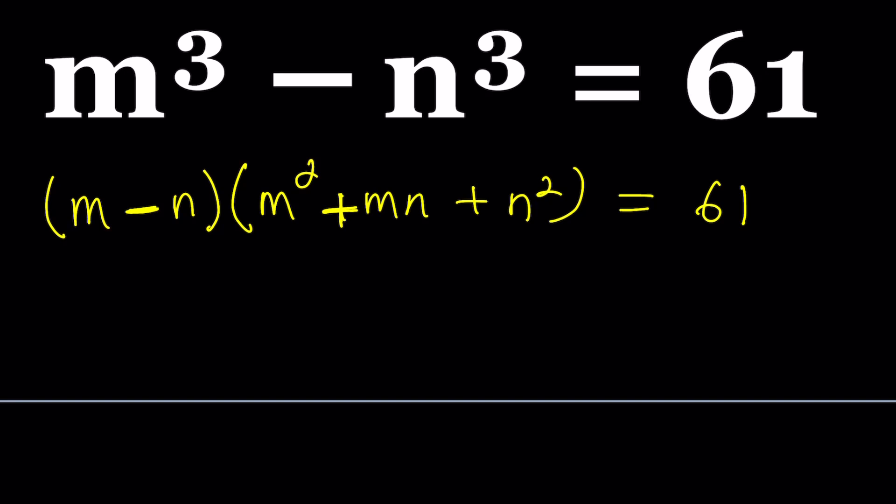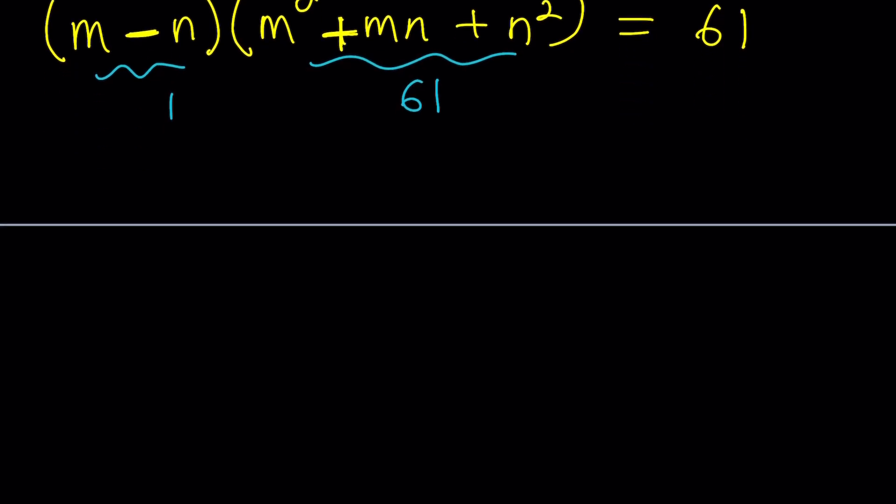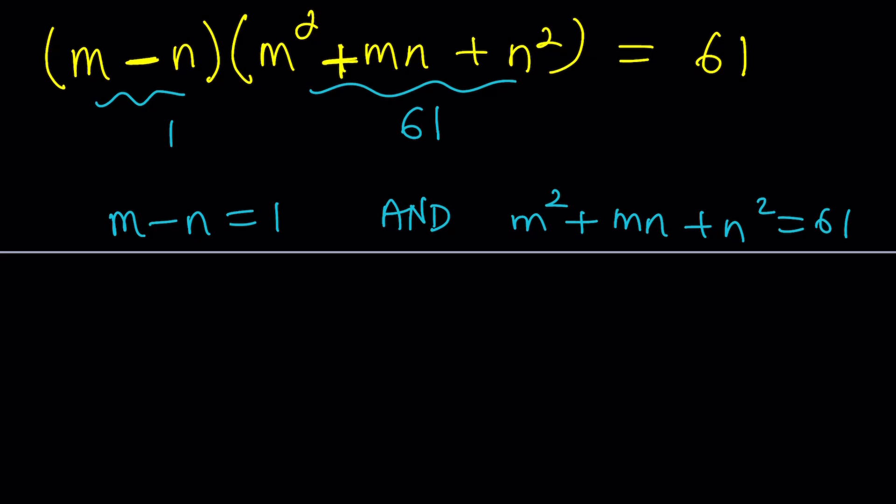I'm going to start with this one being 1 and this one being 61. Why do I go with that? Because the second expression looks a little bit more complicated. I'm just assuming that it's bigger, but we're going to find out. We have to verify. So we get the following equation: m minus n equals 1, and m squared plus m n plus n squared equals 61.